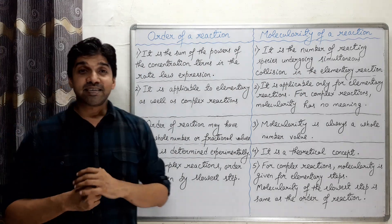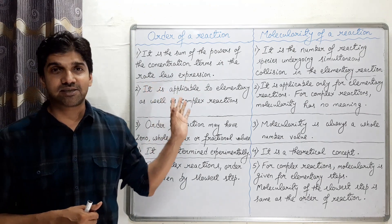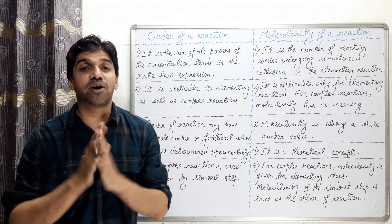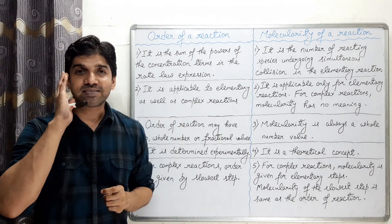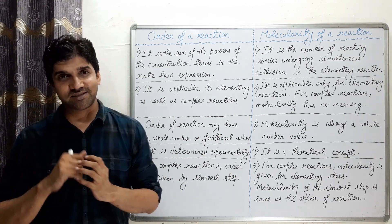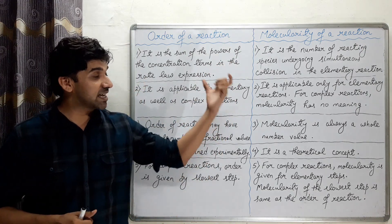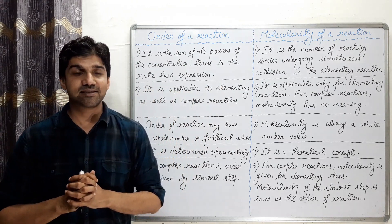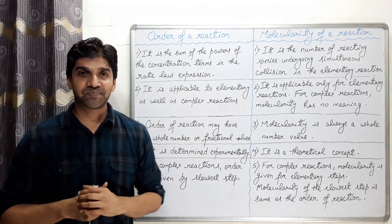Order of reaction is applicable to both elementary and complex reactions. For complex reactions, the slowest step is the rate-determining step and determines the order. Molecularity, on the other hand, is applicable only for elementary reactions. For complex reactions, molecularity has no meaning.